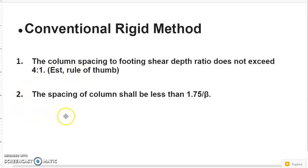The second way to check the rigidity is to make sure the spacing of the column is not greater than 1.75 over β. This is a more accurate way than the first one. And usually, I design foundation using this way.